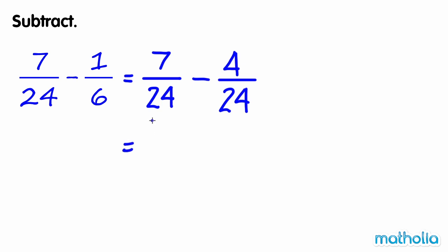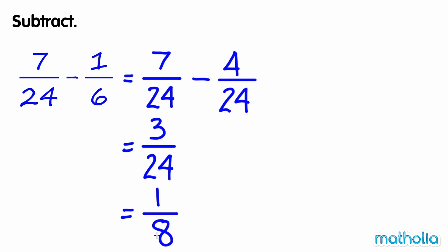So 7 twenty-fourths minus 4 twenty-fourths equals 3 twenty-fourths. We can simplify 3 twenty-fourths by dividing the numerator and the denominator by 3 to give 1 eighth. So 7 twenty-fourths minus 1 sixth equals 1 eighth.